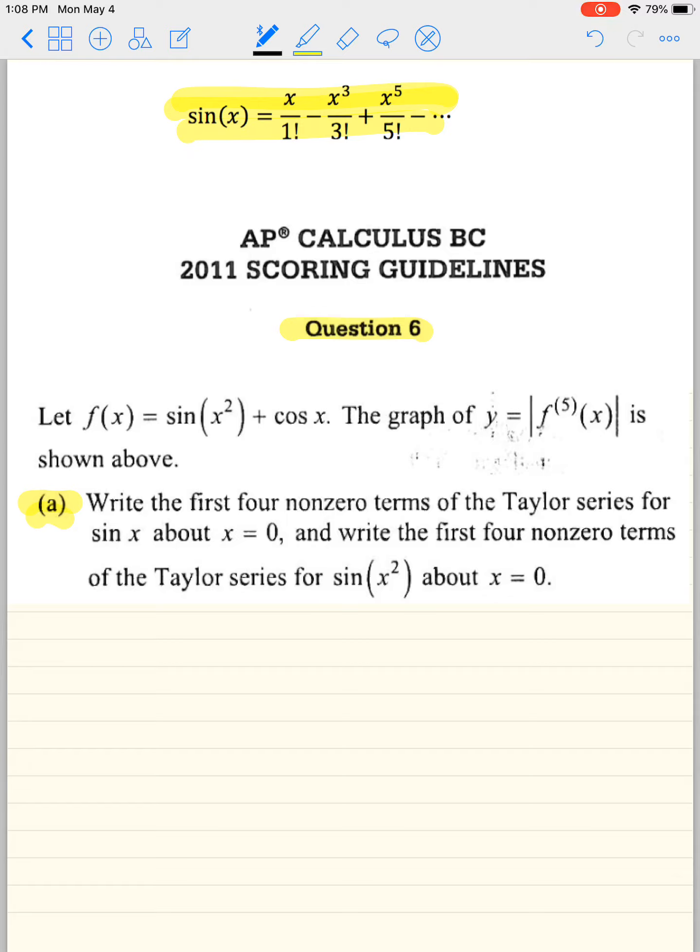And they give you this graph of y, which is shown above, but I don't have it here because I don't need it for this example. Write the first four non-zero terms of the Taylor series of sine x about x equals 0, and then write the first four non-zero terms of the Taylor series for sine x squared about x equals 0.